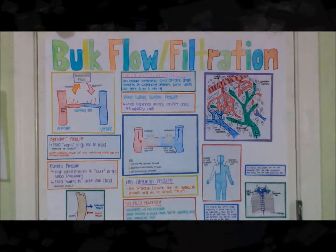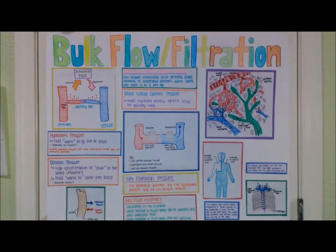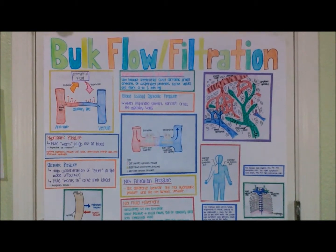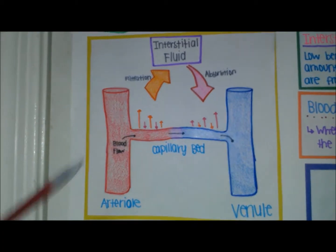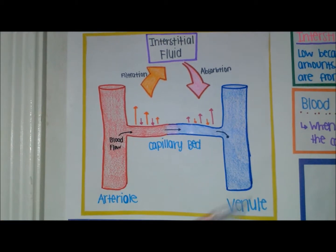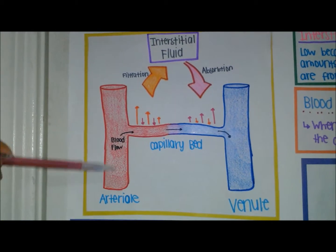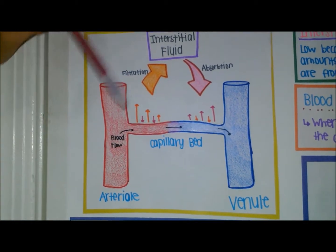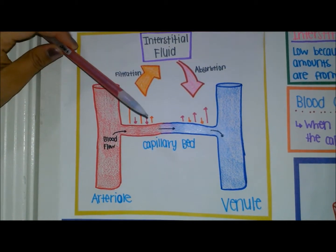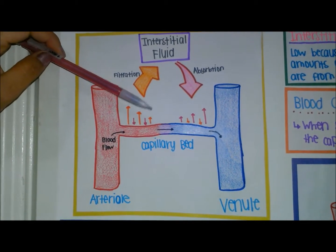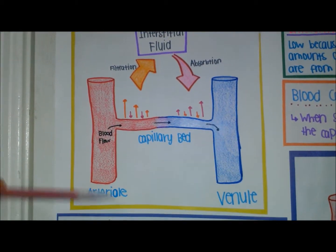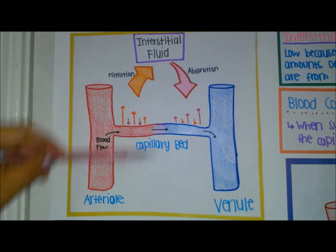My Bio 202 model project topic is bulk flow and filtration in the capillaries. Blood flows from arterial to capillary to venule. The arteriole delivers blood into the capillary, which has thin walls that allow the diffusion of gases, nutrients, and waste. After that, the blood flows into the venule.